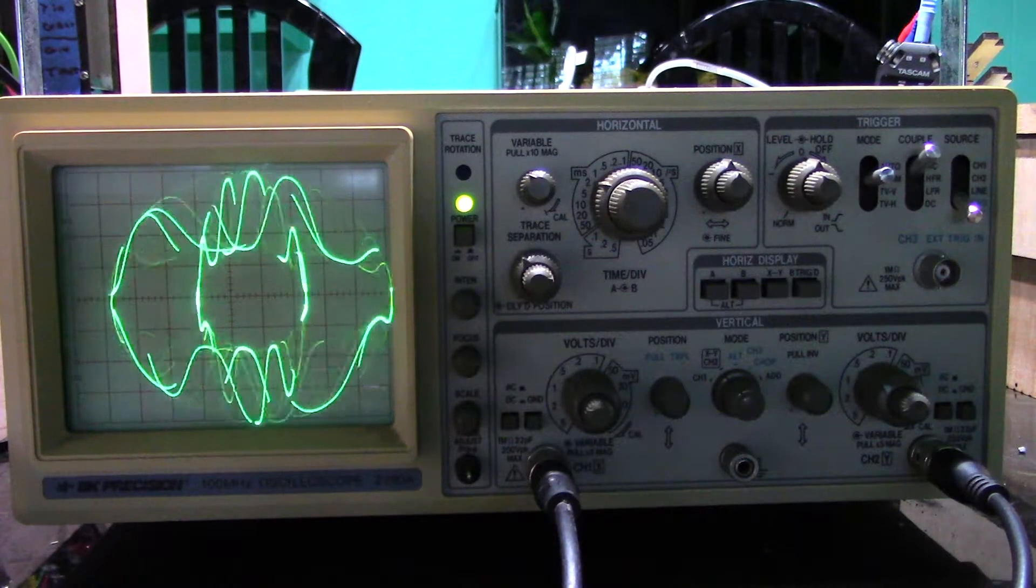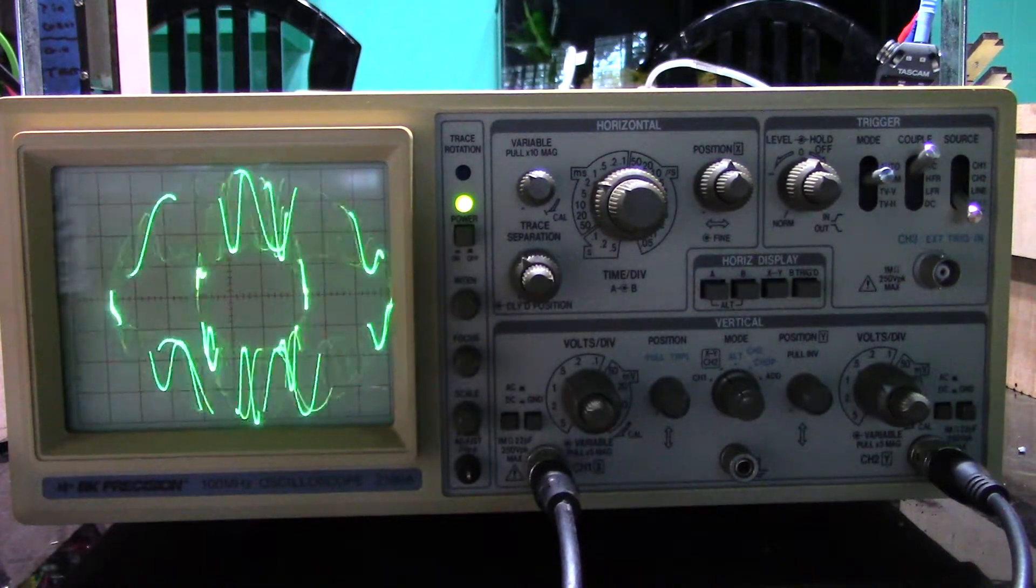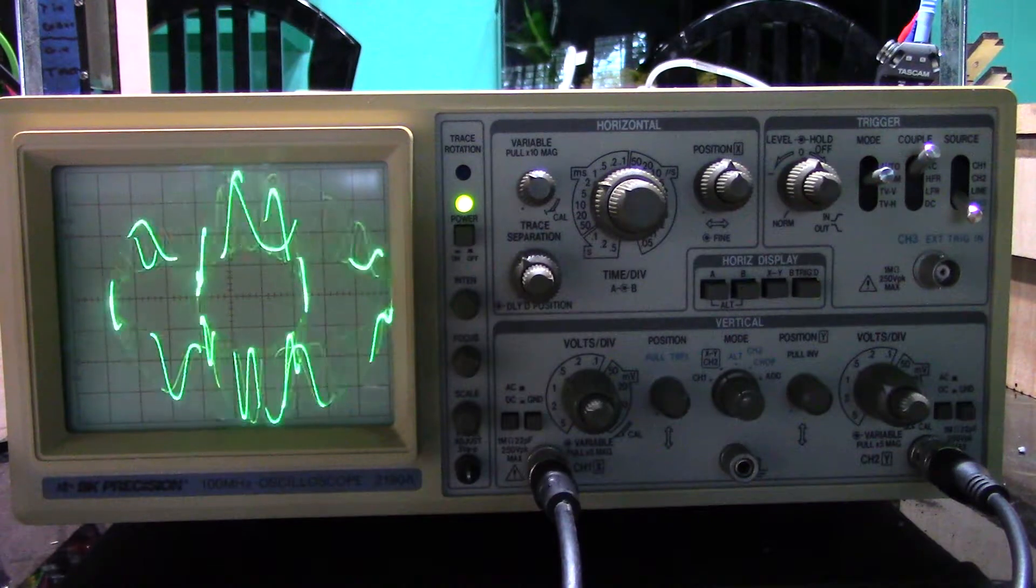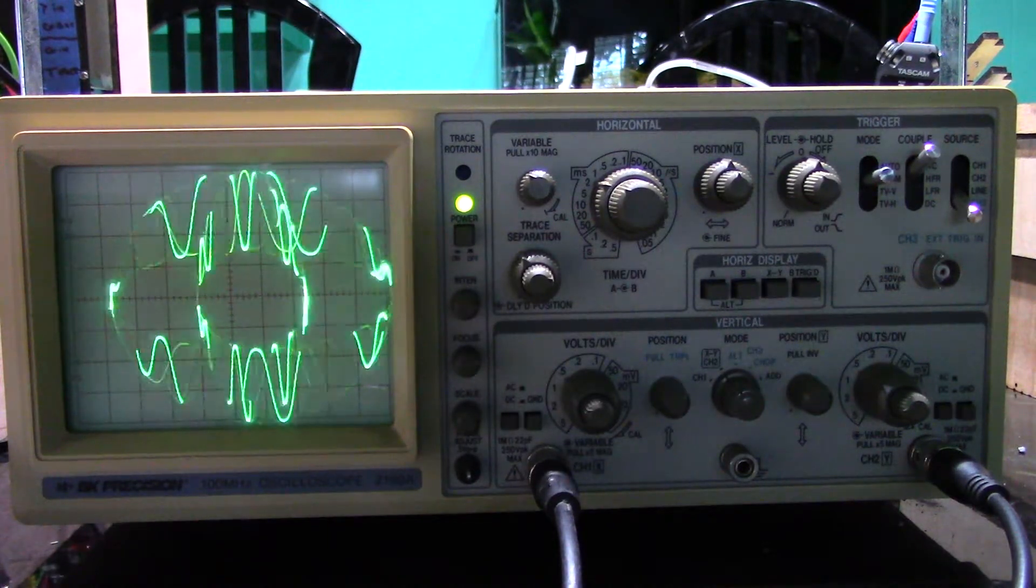You have seen this oscilloscope in a few videos by now. Here is a brief explanation of how to use one of these things for looking at waveforms of sound generated on a Eurorack synth.